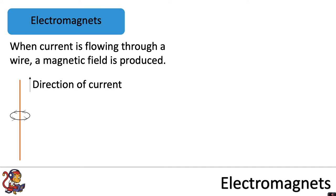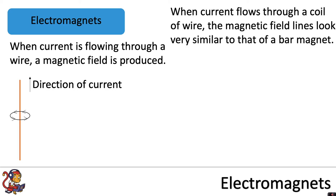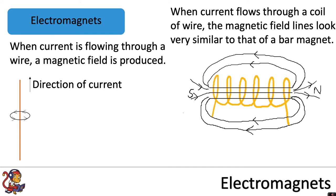Rather than having a straight piece of wire, if you have a coil of wire, when current flows through a coil of wire the magnetic field looks very similar to that of a bar magnet. So here we've got a coil of wire with six turns on the wire and it produces a magnetic field that looks very similar to a bar magnet. This is an electromagnet.